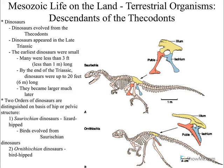First of all, our dinosaurs appear in the late Triassic, so they don't appear for quite a while. Not until the late Triassic, because we're coming out of that huge Permian extinction which wiped out a significant portion of life. So it's going to take life quite a while to rebound. Our first dinosaurs are pretty small, definitely more like a chicken size, but by the time we get to the end of the Triassic, they're definitely more sizable.